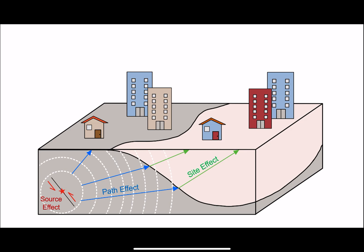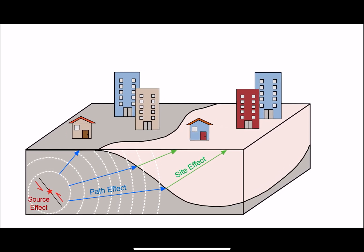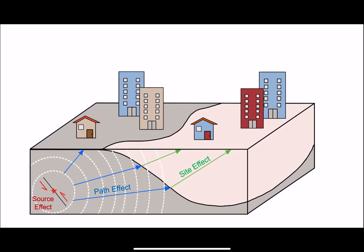Source effects are represented by the magnitude, location, depth, and fault type of the earthquake. Path effects refer to the propagation of the seismic waves from the source to the bedrock beneath the site. And site effects are the effects of the sediments below the ground surface down to the bedrock, involving the geology, topography, and soil properties.